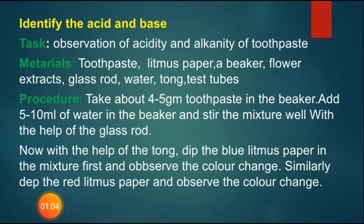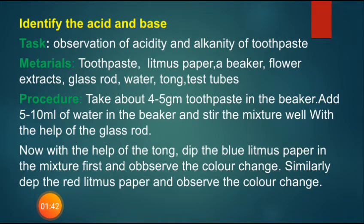Now I am discussing how you can identify acid and base. Task: observation of acidity and alkalinity of toothpaste. This is an experiment you can see in your textbook. Materials: toothpaste, litmus paper, a beaker, flower extracts, glass rod, water, and test tubes. Procedure: take about four to five grams of toothpaste in the beaker and add five to ten ml of water, then stir the mixture well with the glass rod.